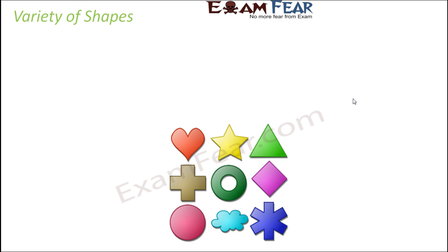This lesson is dedicated to shapes — the various types of shapes that we see around us. On the screen you can see many different shapes: something in the shape of a star, shape of a triangle, the addition shape, the circle, the cloud shape. They are all a variety of shapes, but all of them are different from each other.